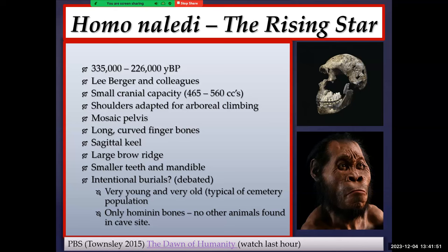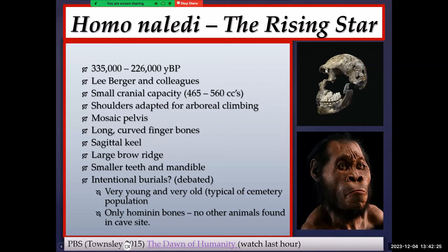From the neck down, Homo naledi's post-cranial anatomy is very mosaic. The shoulders and pectoral girdle are relatively flexible and adapted for arboreal climbing. The pelvis is very mosaic — the top half looking more like a biped, the bottom half more like a quadruped. They have relatively long curved finger bones, some have a sagittal keel similar to Homo erectus, and a relatively large double-arched brow ridge also similar to Homo erectus. They have smaller teeth and mandibles, and possibly evidence for deliberate intentional burials.